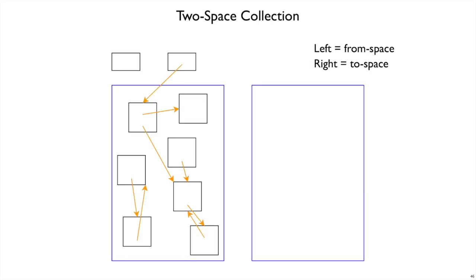Let's look at a picture. We have a to-space collector, so we have two blue boxes. We're starting a collection — this used to be to-space where we were allocating, but since we've started a collection, this is now from-space, and we're going to copy the objects over to to-space. We start by looking at the registers and coloring every referenced object gray.